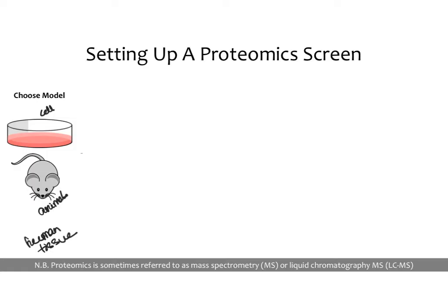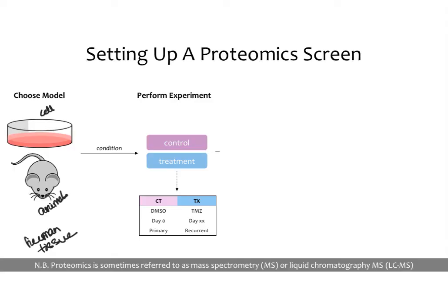Once you've picked your biological sample of interest, you'll expose it to certain conditions. You must always have your control condition, and you'll expose it to some sort of treatment — a drug change, a time change, primary versus recurrent, or any sort of control versus experimental condition. As always, you want to make sure you have the closest control possible to your experimental condition, because in large-scale screens you don't want anything else to throw off your results.